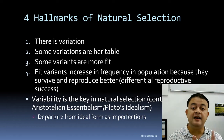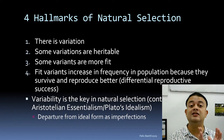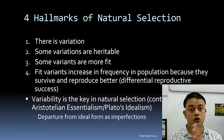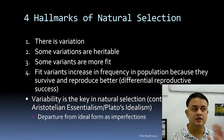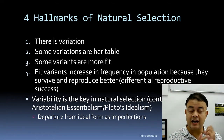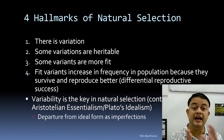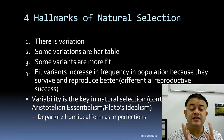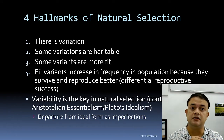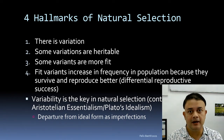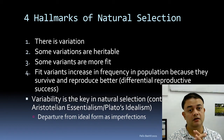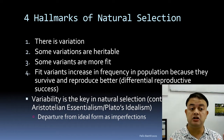Natural selection deals only with heritable variants, not non-heritable ones. Differences in morphology not attributed to genes are not acted upon by natural selection. Third hallmark: some heritable variations make the organism more fit, meaning more adaptive to the environment. Fourth: fit variants increase in frequency in the population because they survive to reproduce better — this is called differential reproductive success.